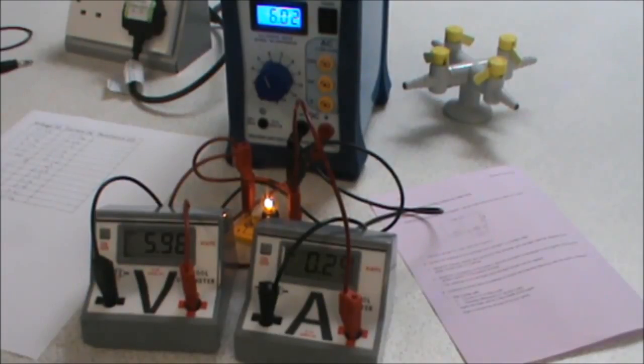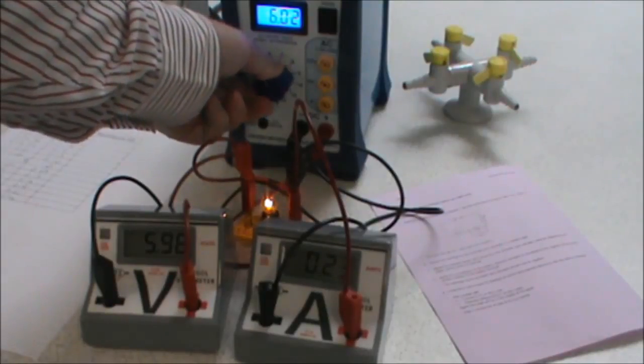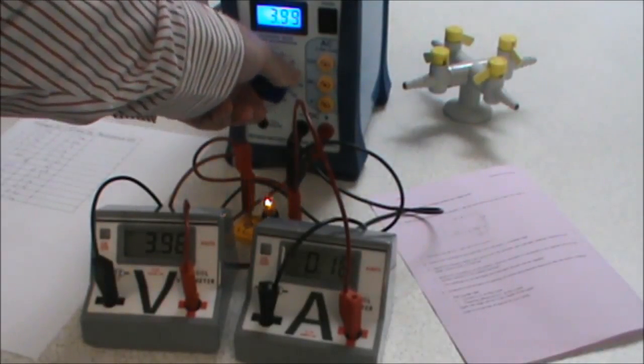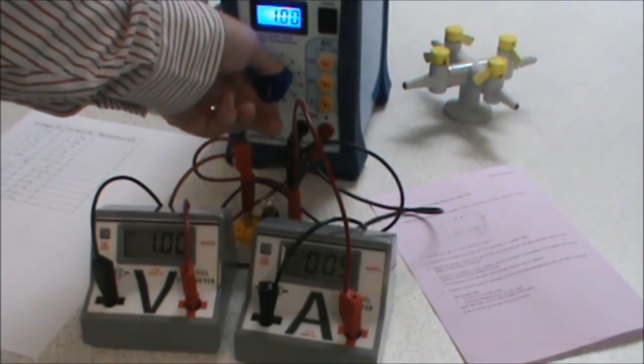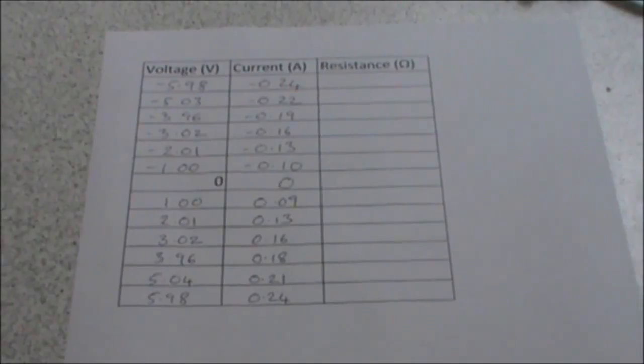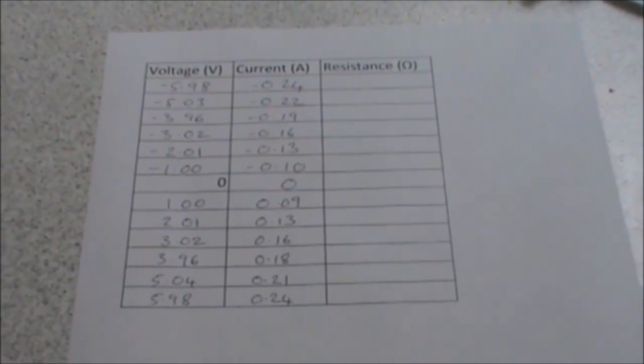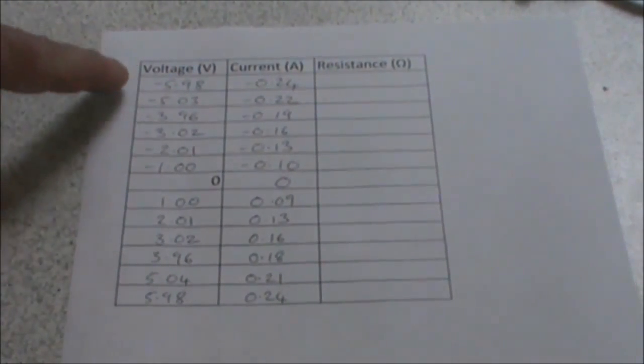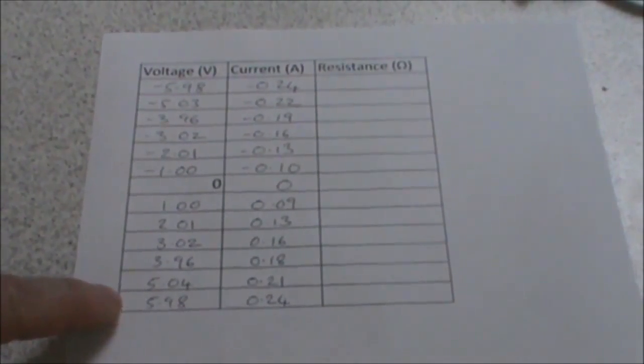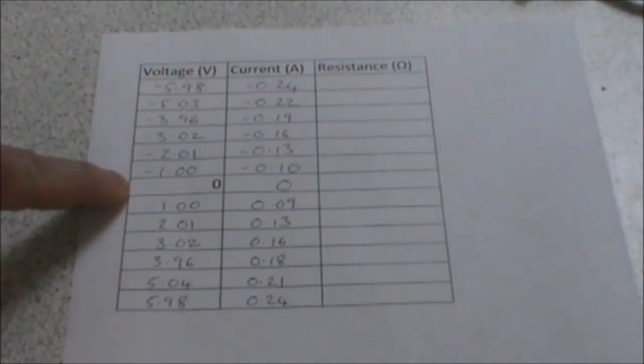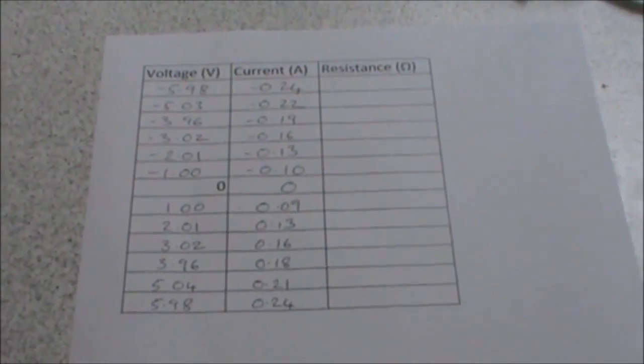Now if you watch the lamp, you can see that on six volts it's very, very bright, and as I reduce the voltage, the lamp gets dimmer until it goes out at one volt. So having completed the experiment, you can see there are my results from minus 5.98 up to plus 5.98 with our zero reading in the middle. We're now going to plot a graph of current and resistance.